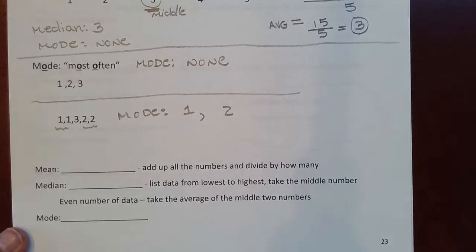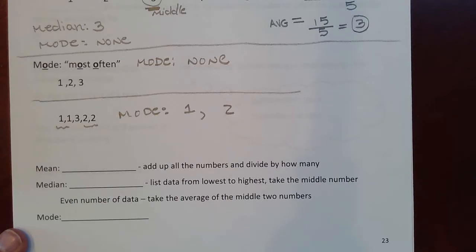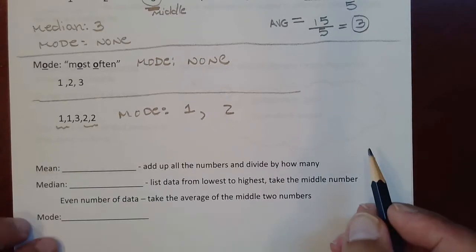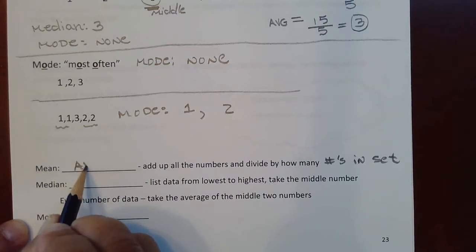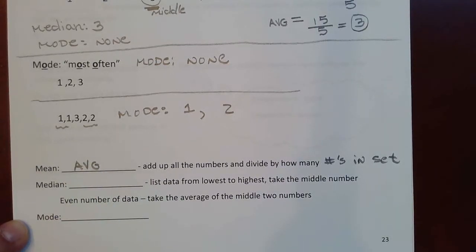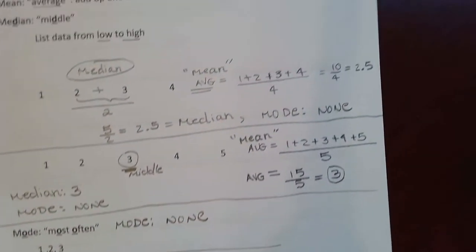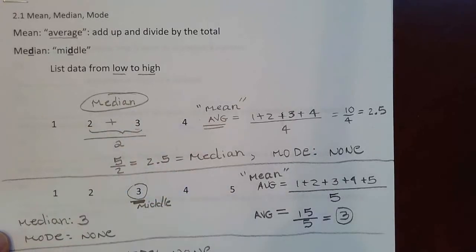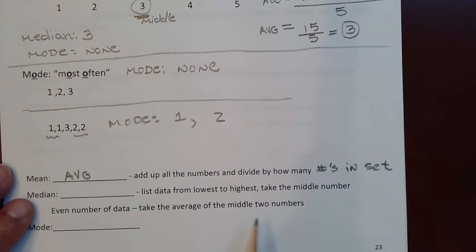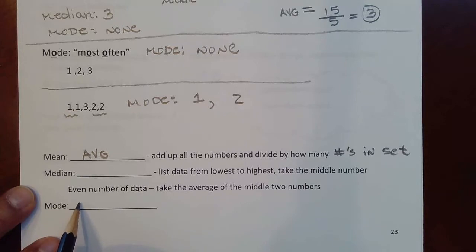So let's see down at the bottom, we have some fill in the blanks. The mean is add up all the numbers and divide by how many numbers are in the set. Don't forget, you can also call this the average. The median is list from lowest to highest and you take the middle number. If there's an even number of data, an even number of elements, like for instance, in this set right here, see how there was one, two, three, four numbers, that's an even number of elements, then you're going to have to average the two middle scores. Take the average of the two middle scores.